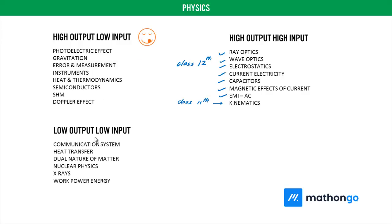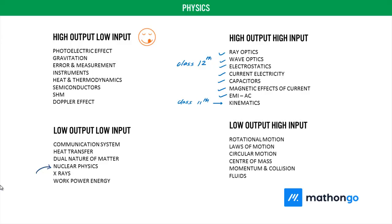Coming to the next category which says low output and low input. Because it's still low input, you can still put low input and get low output. For example: communication system, heat transfer, dual nature of matter, nuclear physics, x-rays, and work power energy. I will put these in low input but also low output. There people can say, sir, low output? Nuclear physics gets questions.